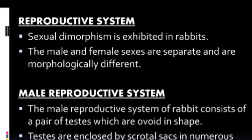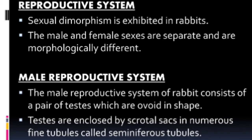Sexual dimorphism is exhibited in rabbit. The male and female sexes are separate and are morphologically different in their external appearance. For example, nipples develop in the female rabbit, while scrotal sacs are present in the male animal. We can identify male and female sex by these morphological characters.